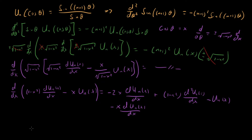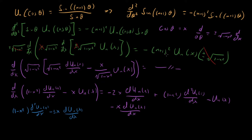Combining everything: we have one-minus-x-squared d-squared U_n over dx-squared, then the two first-derivative terms give minus 3x times dU_n over dx, and then minus U_n of x. On the right-hand side we have minus (n+1)-squared — expanding gives minus n-squared minus 2n — times U_n of x. The minus U_n term on the left cancels with one of these terms from expanding the right-hand side.